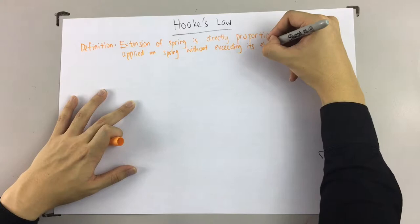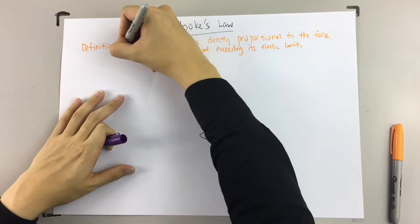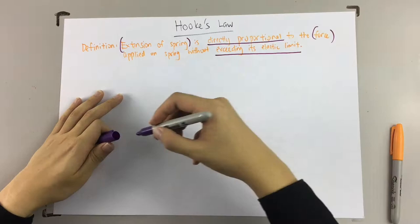Even if you cannot memorize the whole line, you have to memorize these few keywords: extension of spring, directly proportional, force, and without exceeding its elastic limit.